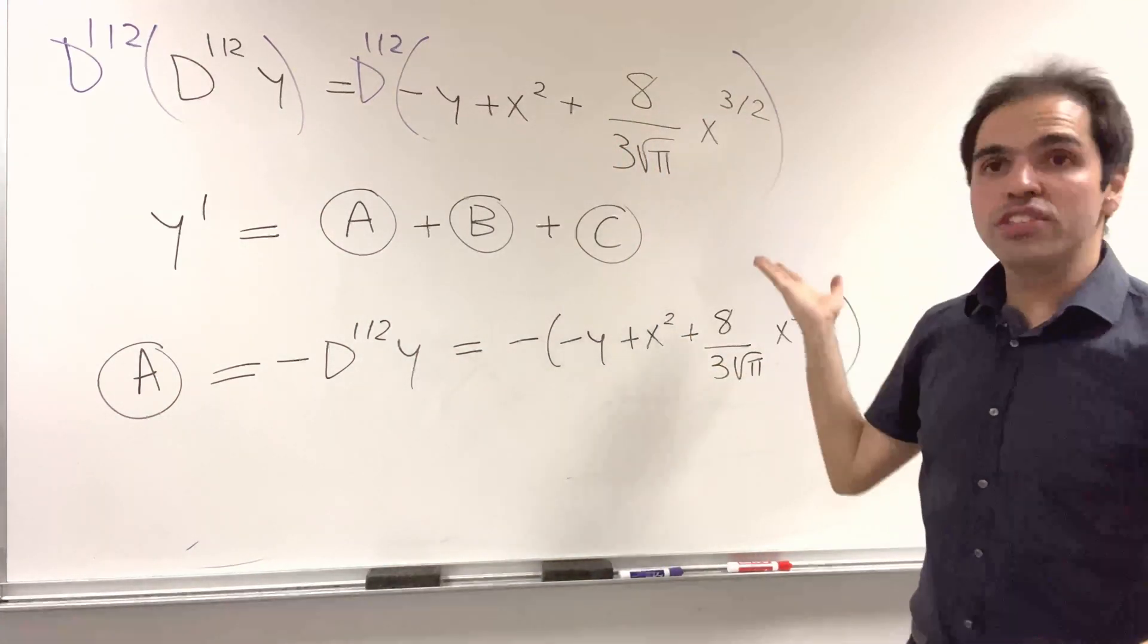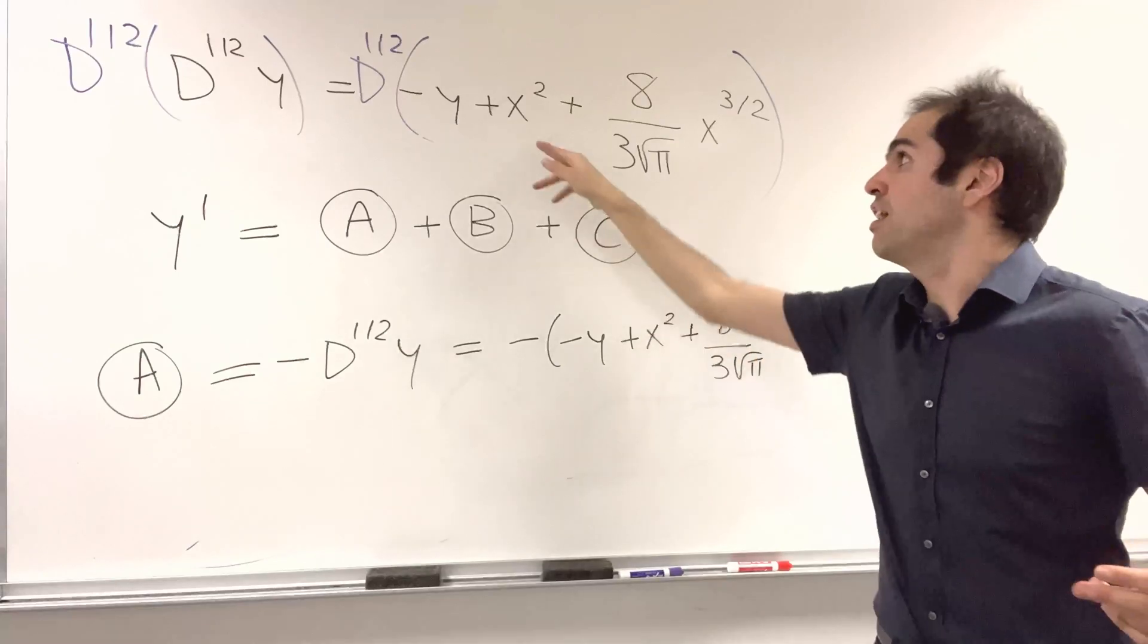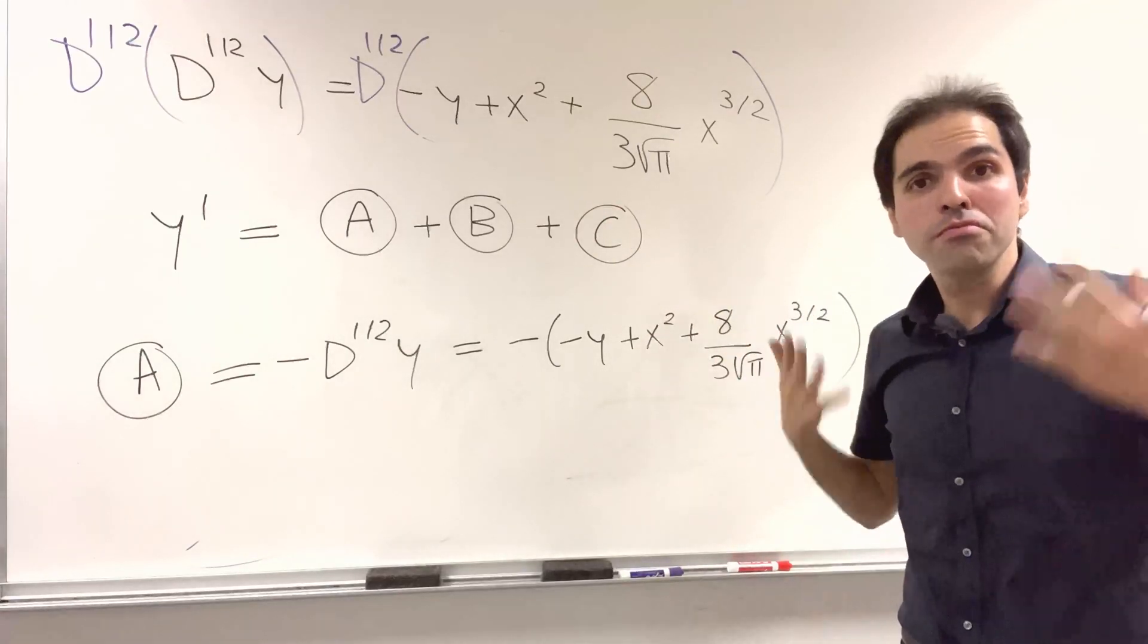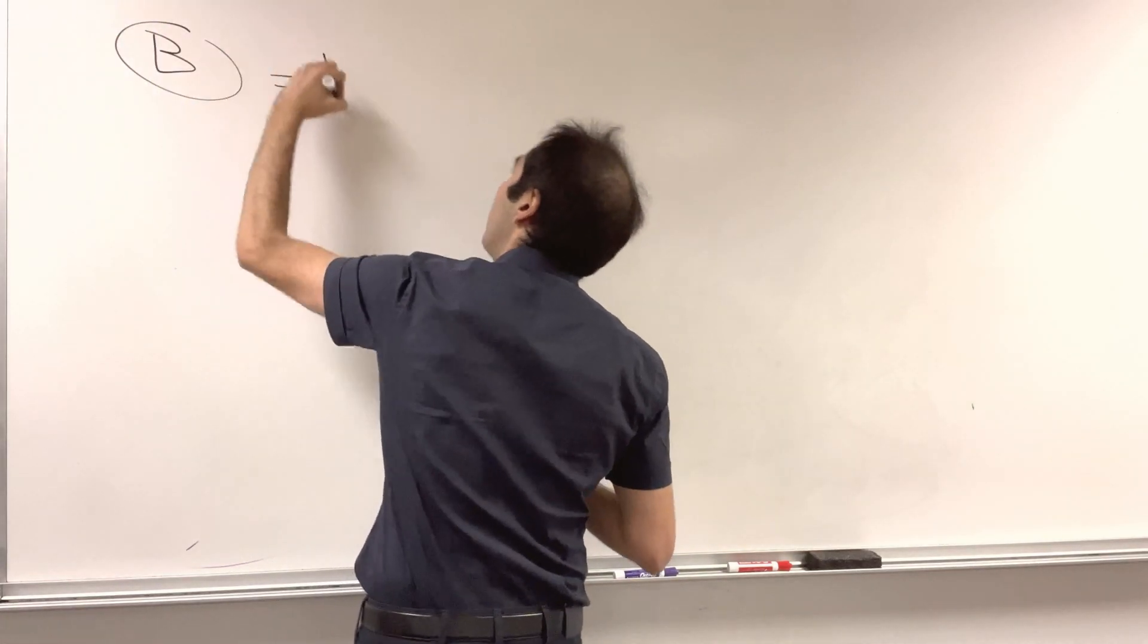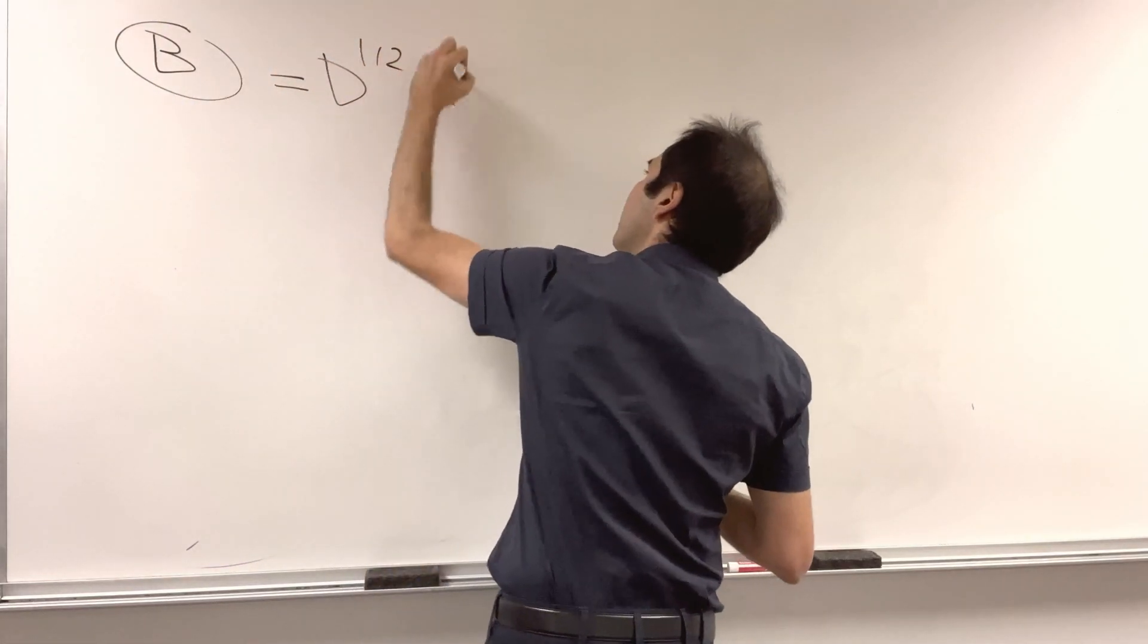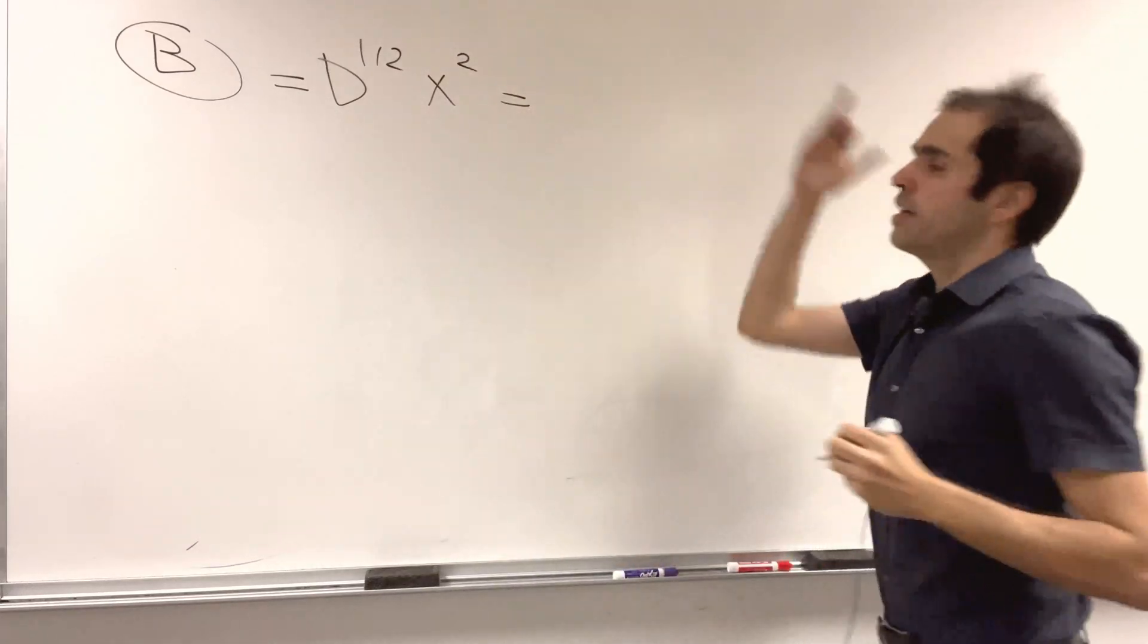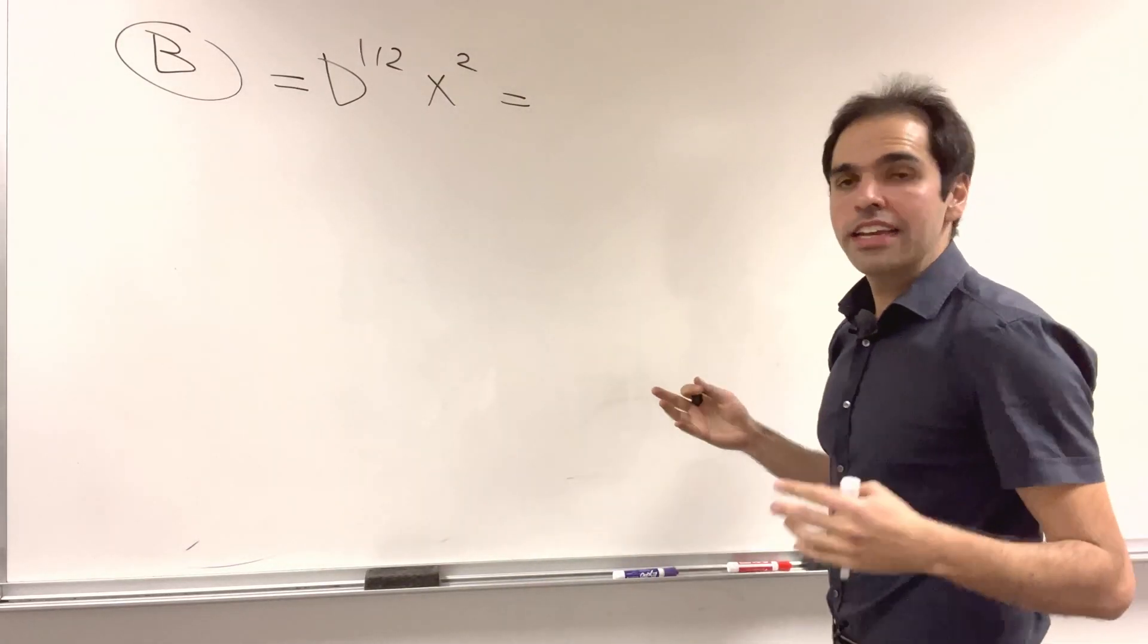And then for B and C, you just need to evaluate those half derivatives. Let's see what we get. So B is just the half derivative of x². Now how do you calculate half derivatives?